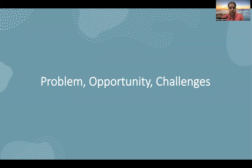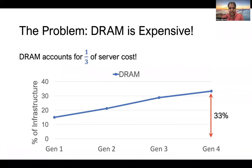Let me outline the problem, opportunity, and challenges first. The problem in front of us has been, as this chart shows, generation over generation, the percentage of cost of our infrastructure that DRAM or memory takes. Over time, the memory cost of our infrastructure has gone up, and today it's about one-third of our fleet. We spend a lot of money on DRAM today.